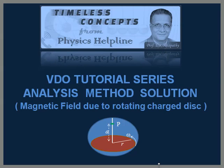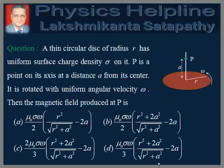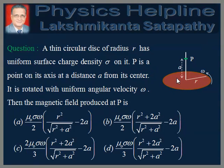The question is as follows. Read the question carefully. The situation is shown in the figure. This is the disc of radius R. It has surface charge density sigma. The disc is rotating about the z-axis with uniform angular velocity omega. P is a point on the axis at a distance a from the center. We are required to find the magnetic field produced by the rotating disc at point P.